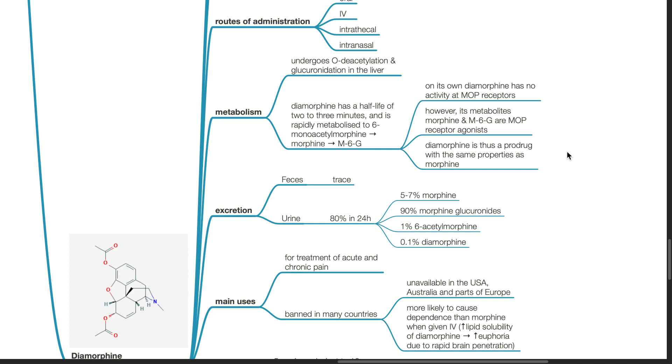On its own, diamorphine has no activity at MOP receptors. However, its metabolites morphine and morphine-6-glucuronide are MOP receptor agonists. Diamorphine thus is a pro-drug with the same properties as morphine.